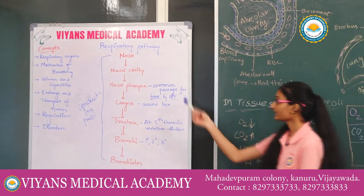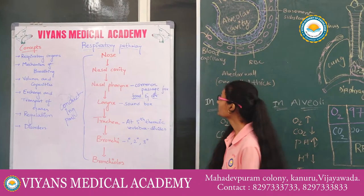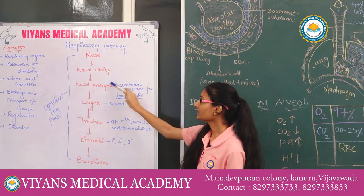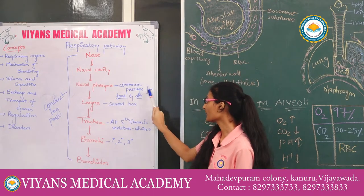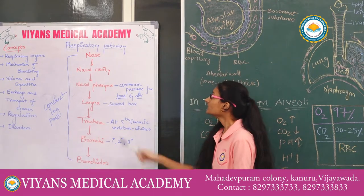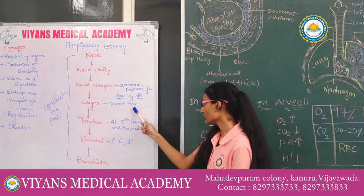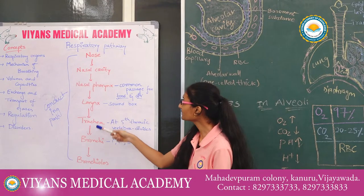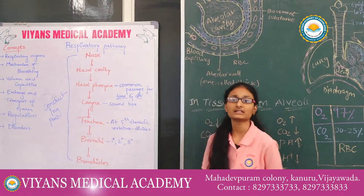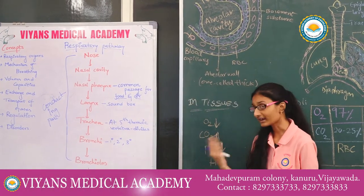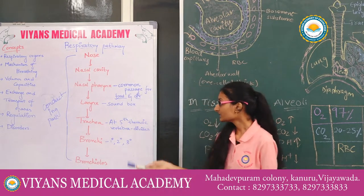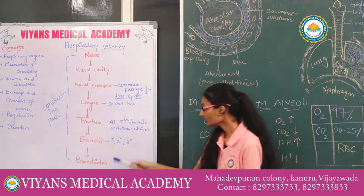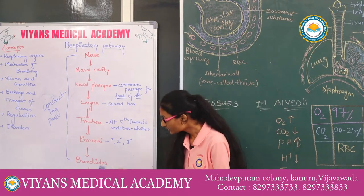Our respiratory organs start with the nose, which leads to the nasal cavity. The nasal cavity leads to the nasopharynx, which is also known as the common passage for food and air. Nasopharynx leads into the larynx, also known as the sound box — in birds, it is known as the syrinx. Larynx leads to the trachea, which at the fifth thoracic vertebra divides into right and left bronchi. The bronchi lead to primary bronchioles, secondary bronchioles, and terminal bronchioles, which in turn lead to alveoli.